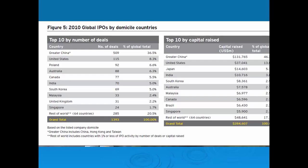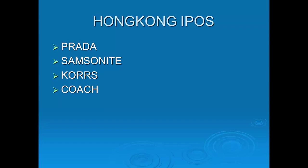In 2010, the US economy was not doing well while Asia was doing very well. That year, the top 10 IPO markets by number of deals were led by China with 509 deals, representing 36.5% of the global IPO market. In the US, only 115 deals were done, representing 8.3% of the global total. Some prestigious US companies — Coach, Prada, Samsonite, and Coors — chose to do IPOs in Hong Kong rather than the US because of strong brand recognition in Asia and a stronger market there. In 2014, Alibaba, a Chinese company, chose to do its IPO in the US.